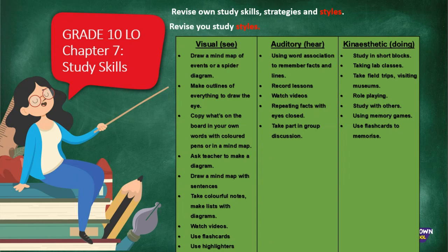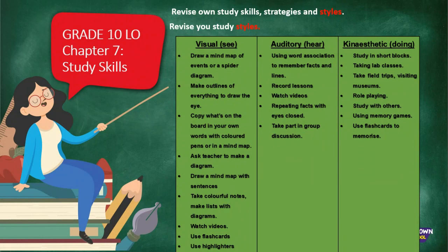Visual learners draw a mind map of events or a spider diagram, make outlines of everything, copy what's on the board in their own words with colored pens, ask the teacher to make a diagram, take colorful notes, make lists with diagrams, and watch videos. The videos you watch on YouTube and Microsoft Teams are stimulating visual learners the most. They also use flashcards and highlighters - we're going to be looking at how to do mind maps and flashcards in upcoming slides.